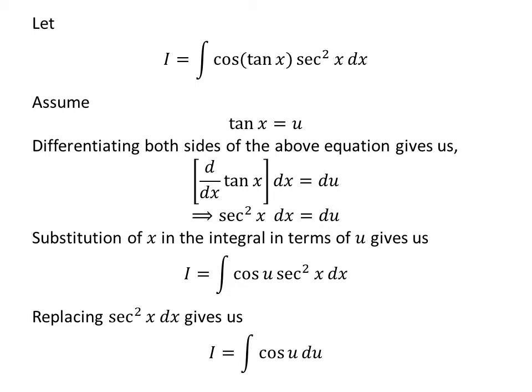Let us replace secant squared of x times differential of x by differential of u, which we had found out earlier, so I is equal to the integral of cosine of u with respect to u.